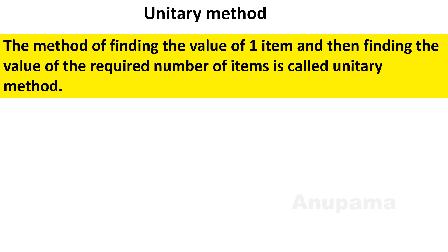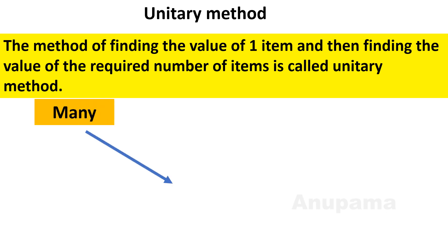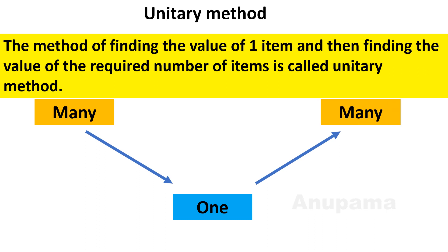It means if you have the cost of so many things, you can find out the cost price of one. Then you can find out the cost for as many items as required. So, it is the unitary method. And with the help of this method, we will solve his problem.